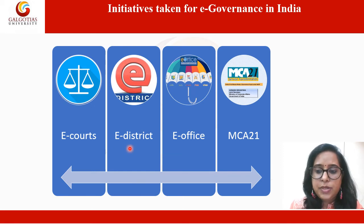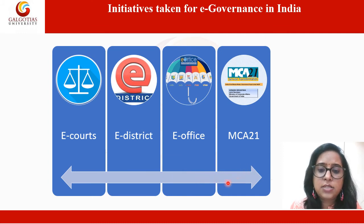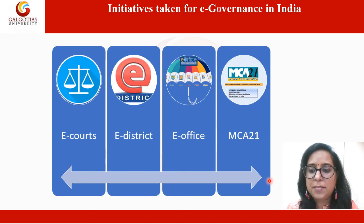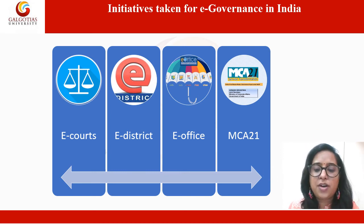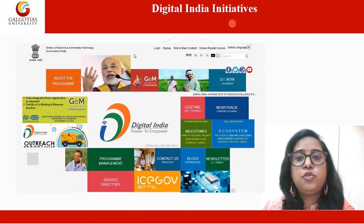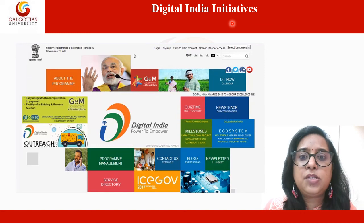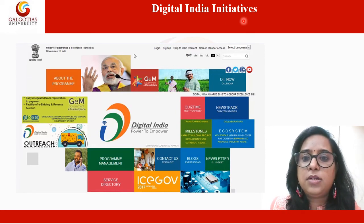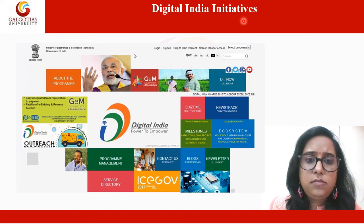The sixth initiative is MCA-21. Another is E-Office, launched by the Department of Administrative Reforms and Public Grievances. This aims at significantly improving the operational efficiency of the government by transitioning to a less paper-based, paperless office — meaning less misuse of environmental resources, essentially an environment-friendly office. The Digital India Initiative is an umbrella program to prepare India for a knowledge-based information economy. It weaves together a large number of ideas and thoughts into a single comprehensive vision so that each is seen as part of a larger goal.